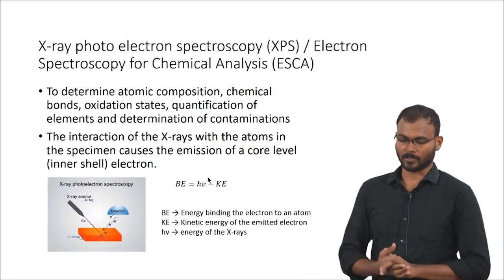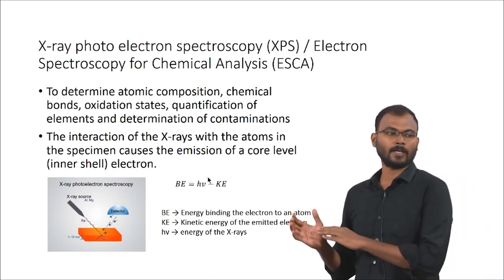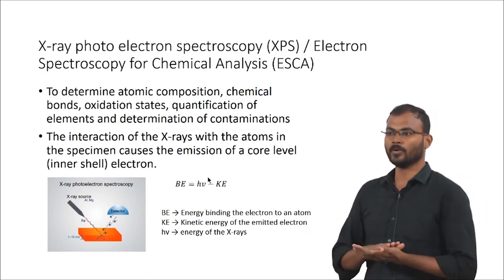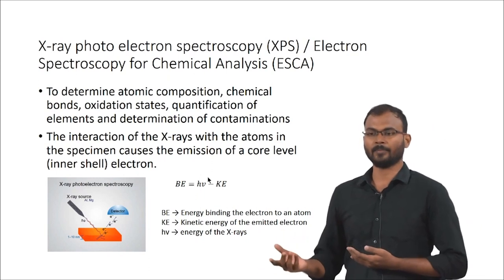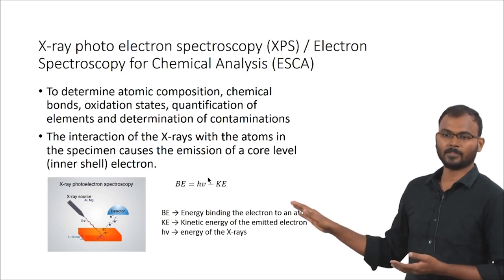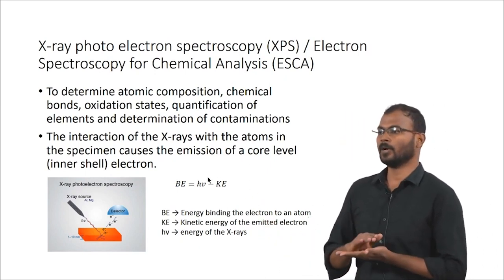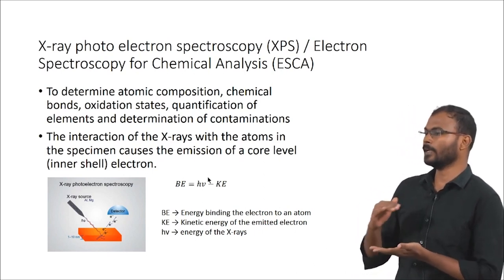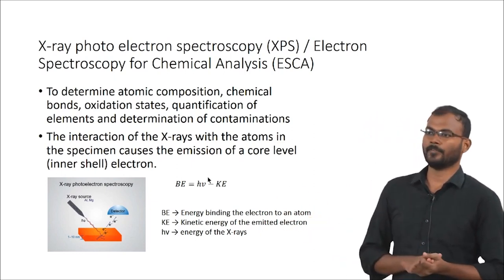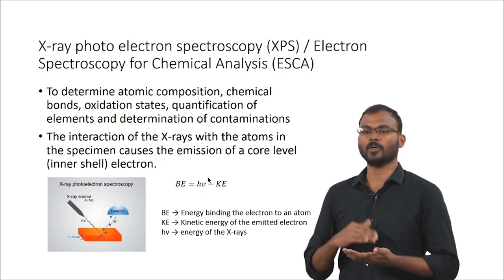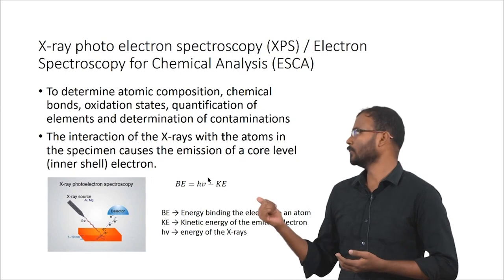X-ray photoelectron spectroscopy (XPS), also known as electron spectroscopy for chemical analysis (ESCA), is a technique where you can find out what elements are present on the material surface. If you have a material and don't know what elements are on the surface, this analysis will show all elements — metal ions or any organic compounds present. XPS is only a surface technique; it measures up to a depth of approximately 10 nanometers, so below that depth the elemental analysis is not captured.